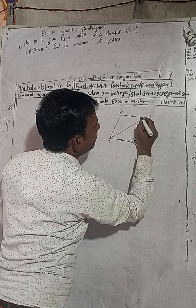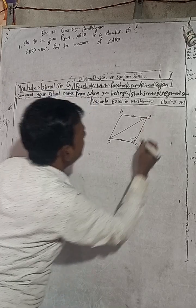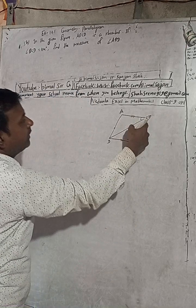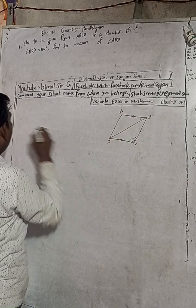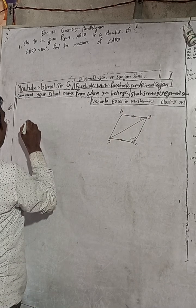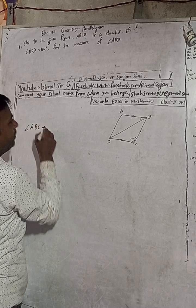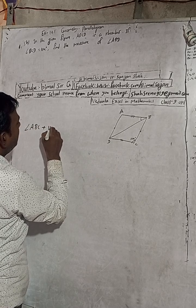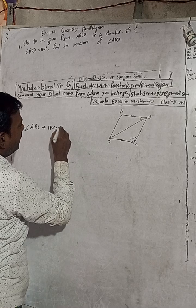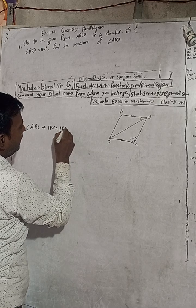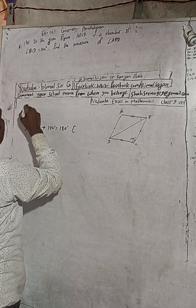To find angle ABD, I will first find the total angle ABC. So angle ABC plus 114 degrees is equal to 180 degrees. I will write the reason — this is the 5B solution.